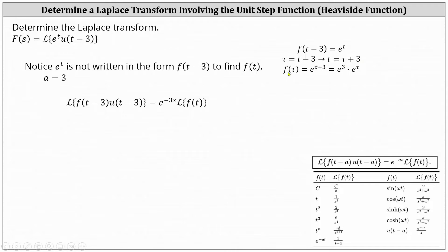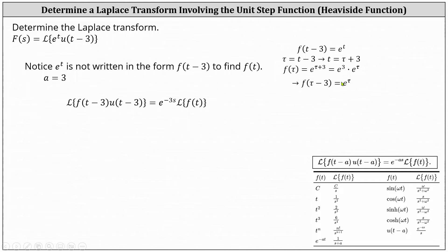For the next step, we determine the function f of tau. To do this, we replace t with tau plus three in f of the quantity t minus three, which gives us f of tau equals e to the power of tau plus three. Using exponent properties, we can write this as the constant e cubed times e to the tau. Notice f of the quantity tau minus three, found by replacing tau with tau minus three in f of tau, gives us e to the tau — the same as f of the quantity t minus three, just with a different variable.